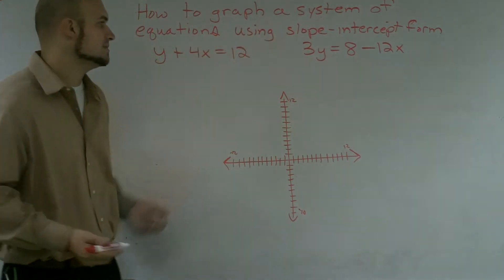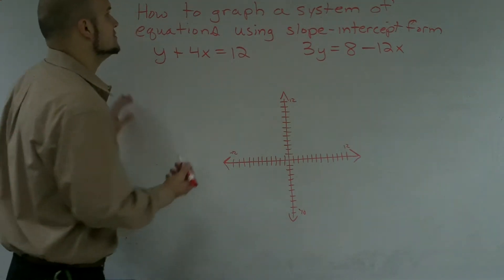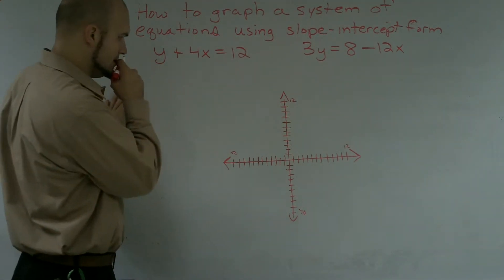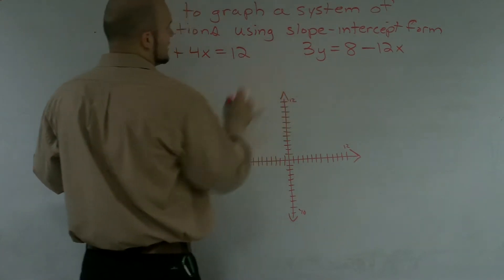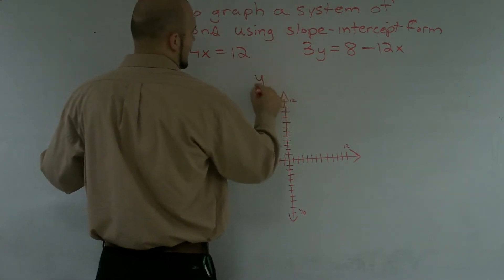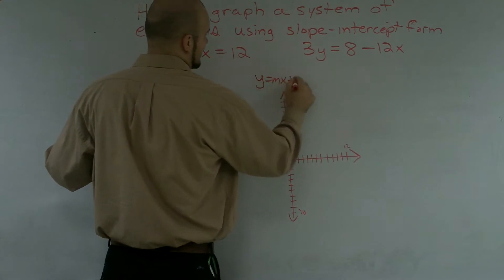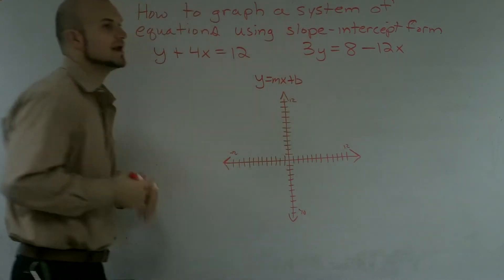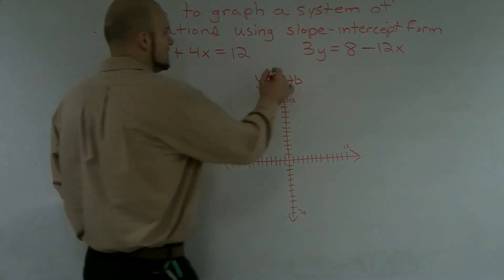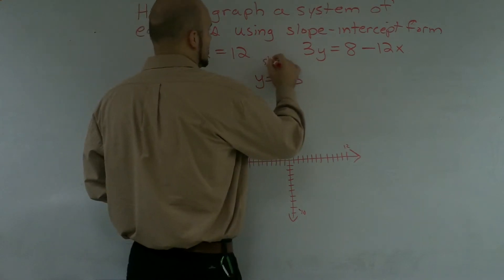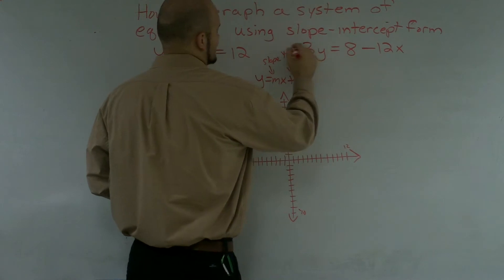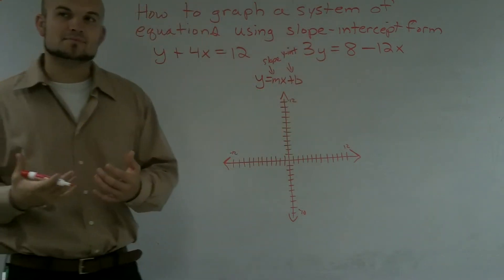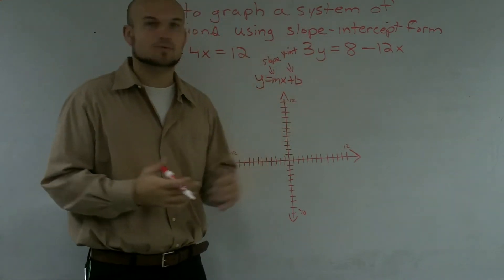And when I say using the slope-intercept form, that means I'm going to want to put both my equations into y equals mx plus b form. Because when I put it in y equals mx plus b form, I now know that that's the slope and this is my y-intercept. And it's a very easy graphing process once I can determine those two points.